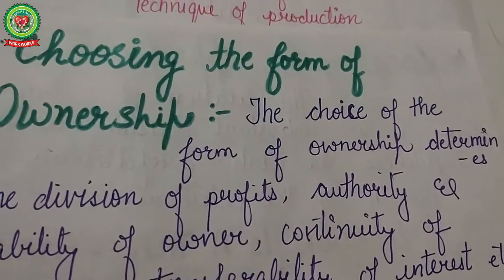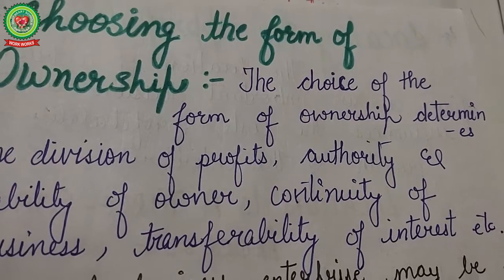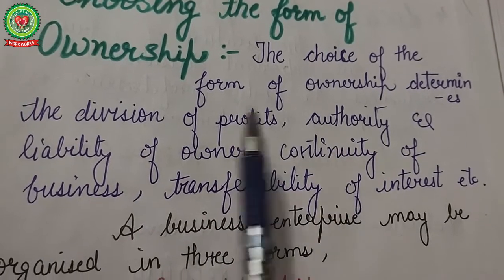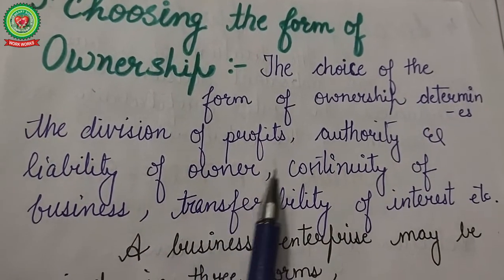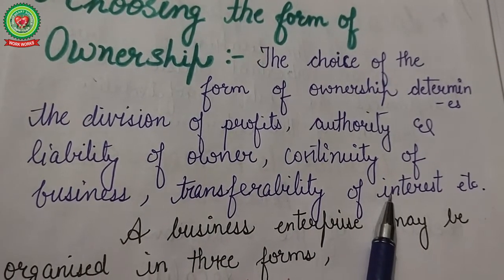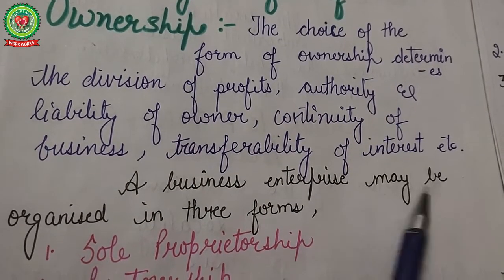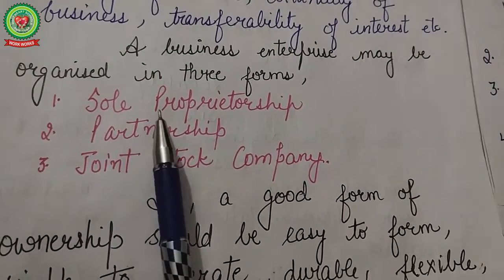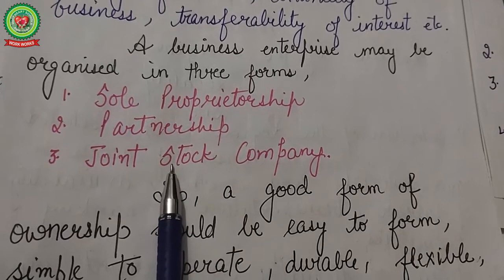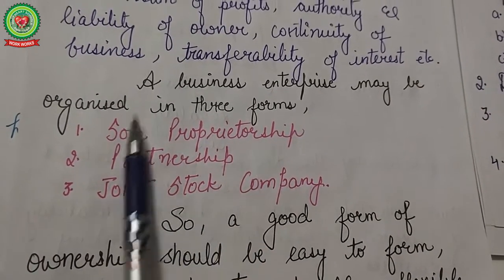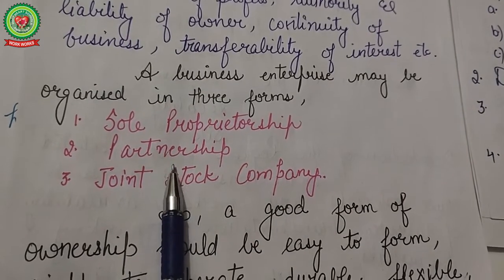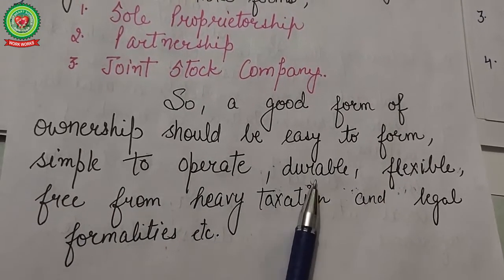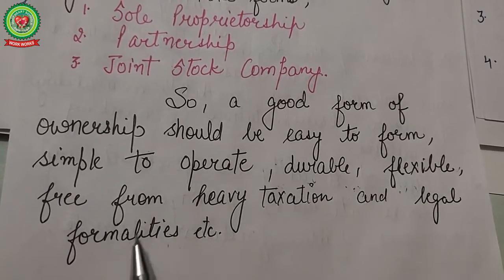The next step is choosing the form of ownership. The choice depends on division of profits, authority and liability of the owner, continuity of the business, and transferability of interest. A business enterprise may be organized in three forms: sole proprietorship, partnership, and joint stock company. A good form of ownership should be easy to form, simple to operate, durable, flexible, and free from heavy taxation and legal formalities.